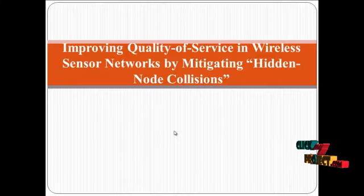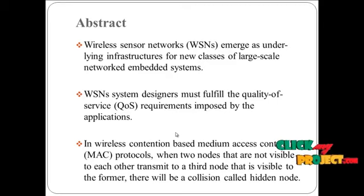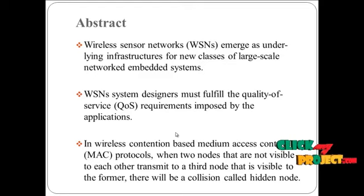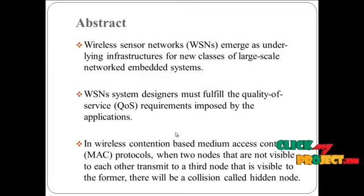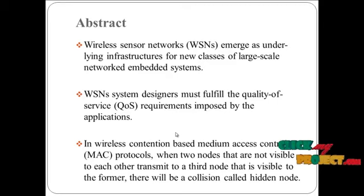This is the flow. Wireless sensor network has emerged as underlying infrastructure for new classes of large-scale network embedded systems. The wireless sensor network is required to fulfill quality of service requirements. In wireless connection, based upon the medium access control, when two nodes are not visible to each other, they transmit through a third node — this collision is called a hidden node.